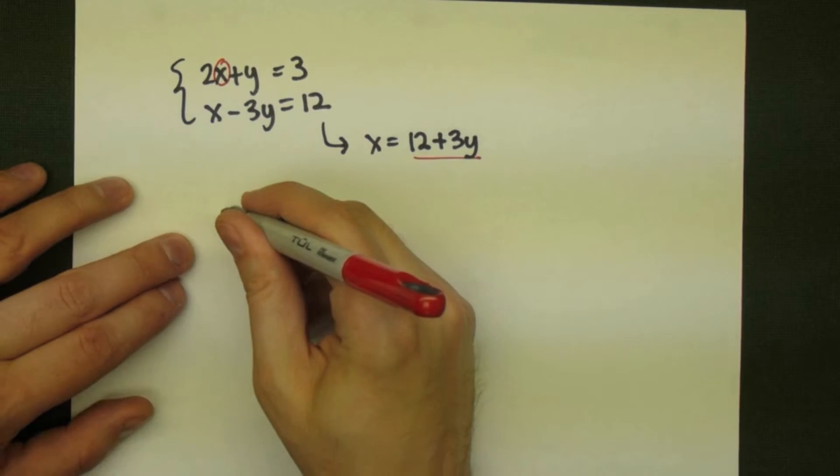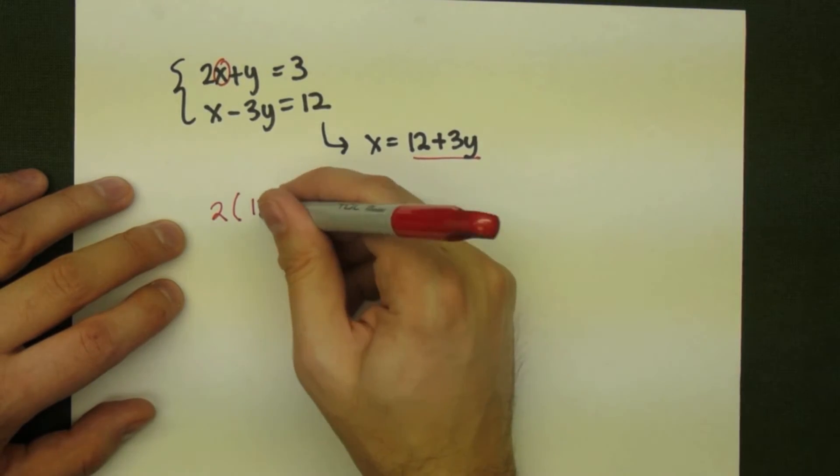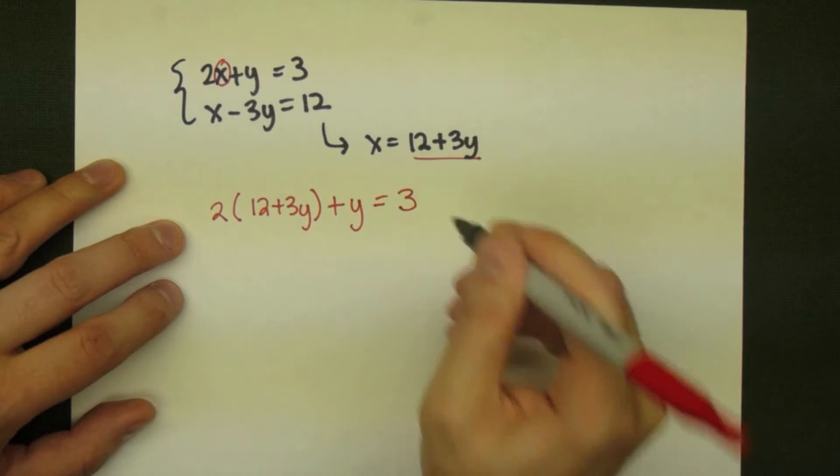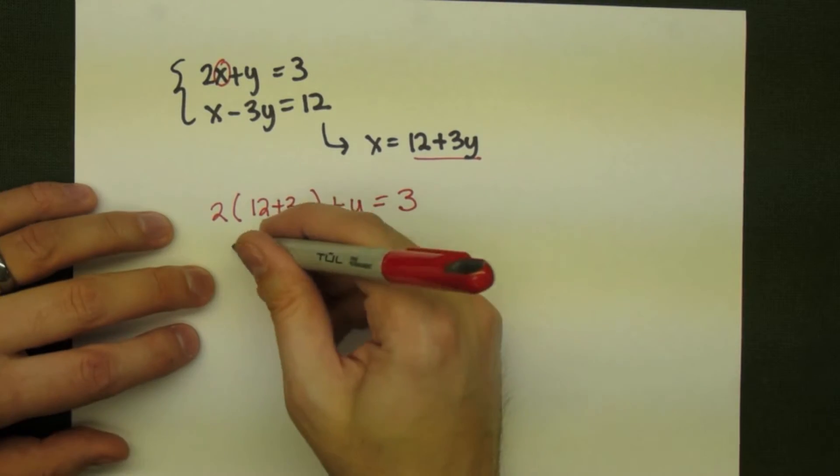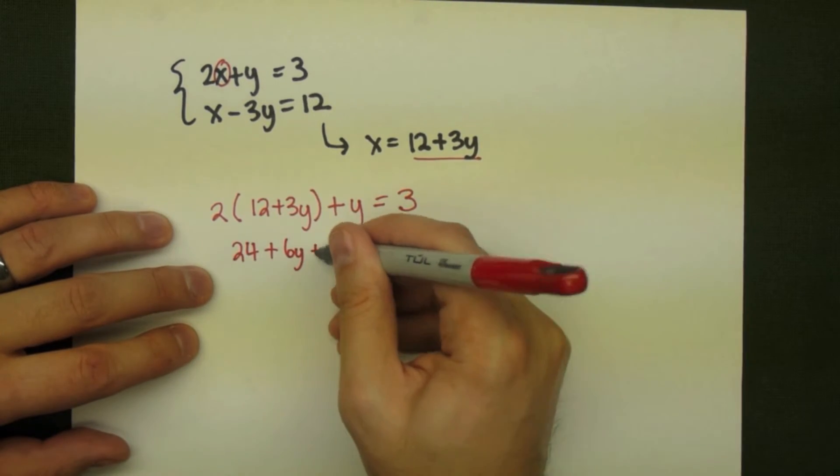We substitute that in for x and we see that 2 times 12 plus 3y plus y has to equal 3. And then we go through the normal steps and solve this linear equation.